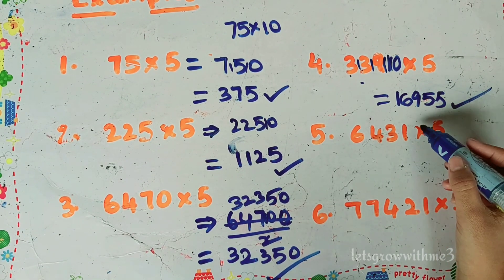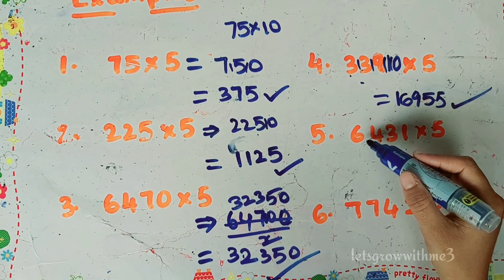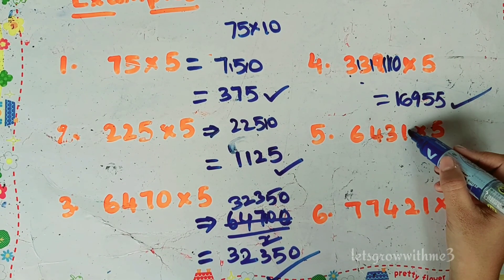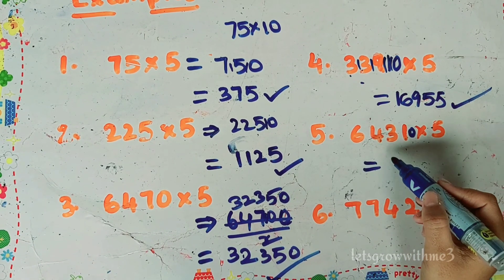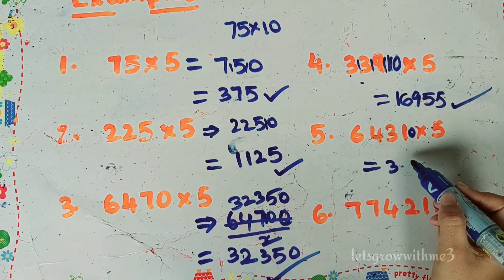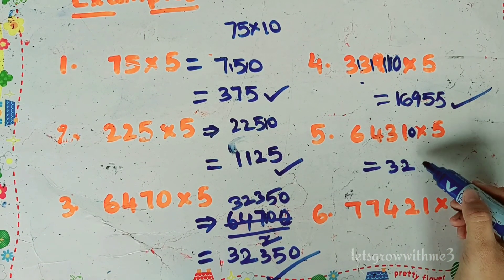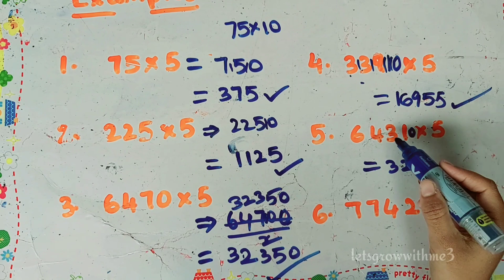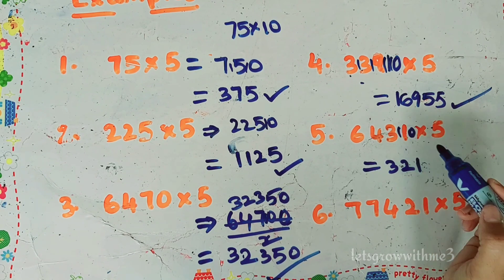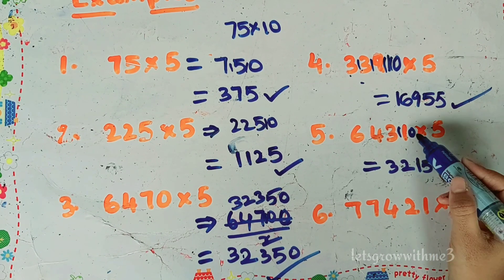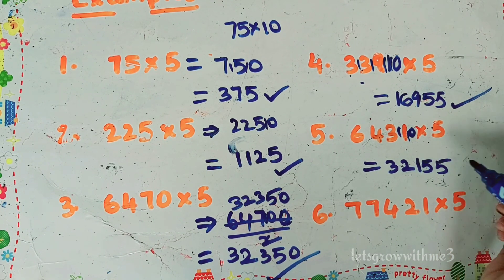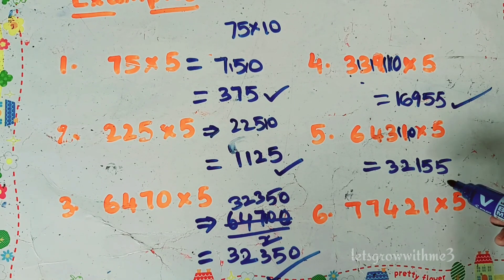Next let's do this question: 64310. 2 table. 3 times. 2 times. 1 times. Remainder 1. 5 times. Malhi remainder 1. So the answer is 3, 2, 1, 5, 5.